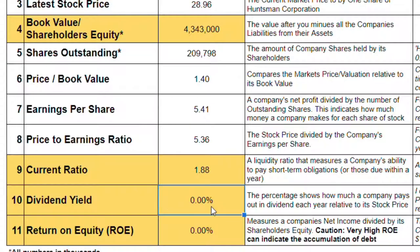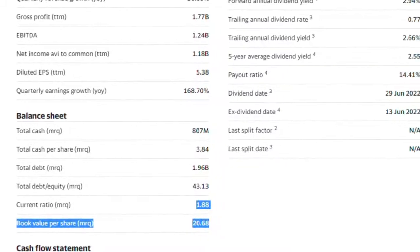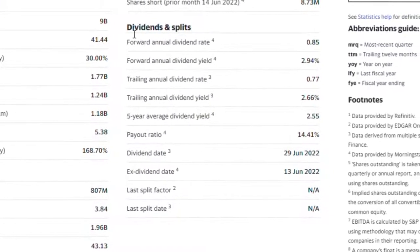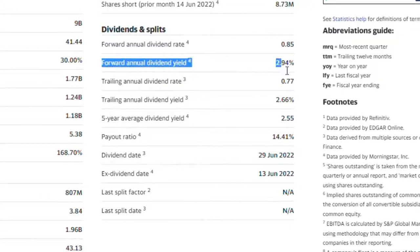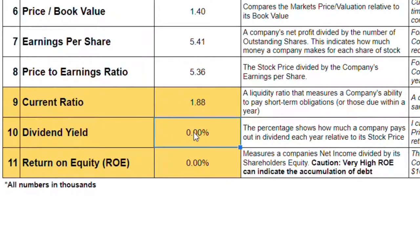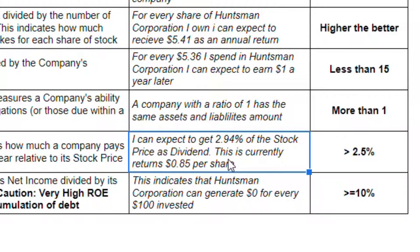Dividend yield is the next item, showing the percentage of how much the company pays in dividends each year relative to the stock price. Going back to Yahoo Finance, under Dividends and Splits, the forward annual dividend yield is 2.94%. This means we can expect to get 2.94% of the stock price as dividends, returning $0.85 per share. The guidance, if you are looking for dividend income, is to find a yield of at least 2.5%, and Huntsman would pass.